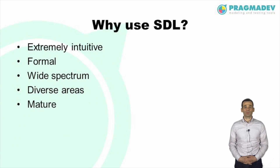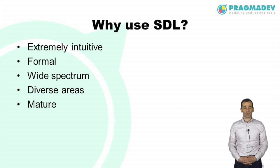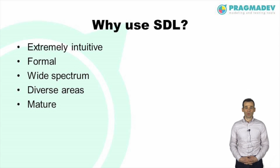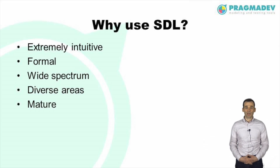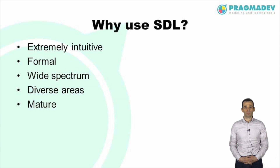SDL is a graphical modeling language which is extremely intuitive. The most important characteristic of SDL is its formality — the semantics behind every concept are precisely defined. This allows a model in SDL to be analyzed and interpreted without any ambiguities. SDL is a wide spectrum language that can be used for both high-level and detailed modeling, from requirements to implementation. Although it is widely used in telecommunications, SDL has also been applied to areas ranging from aircraft, train control and automotive to medical and packaging systems.